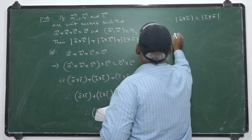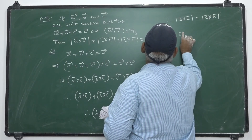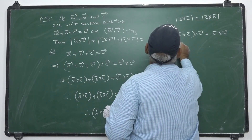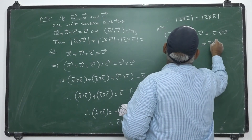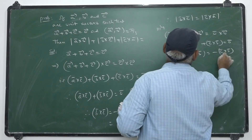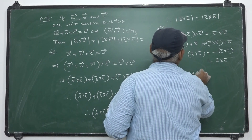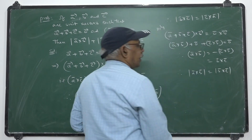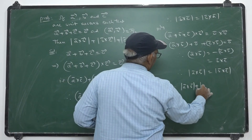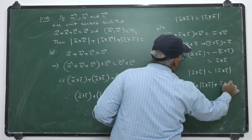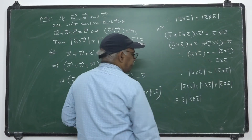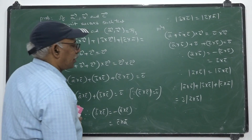Similarly, taking cross product with b̄: ā × b̄ + b̄ × b̄ + c̄ × b̄ = 0̄. Since b̄ × b̄ = 0̄, ā × b̄ = -c̄ × b̄ = b̄ × c̄. Hence |ā × b̄| = |b̄ × c̄|. From these two results, all three magnitudes are equal, so the sum = 3|ā × b̄|.